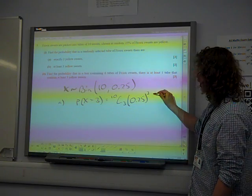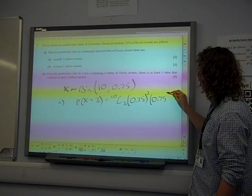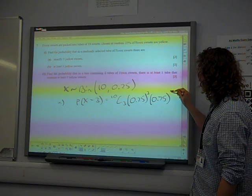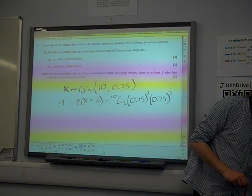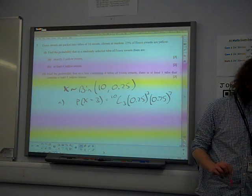And there would be seven failures, non-yellow sweets. So that would be 0.75 to the seven. And if we put that into the calculator, you get 0.250.